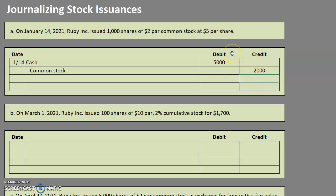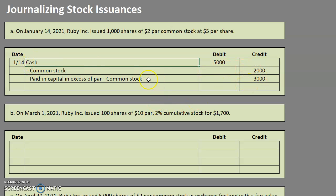Obviously, debits have to equal credits, so we're going to need an additional $3,000 credit. The account we're going to use to plug that is going to be paid-in capital in excess of par — common stock. Now our debits equal our credits, debits are coming first, and we have everything lined up.